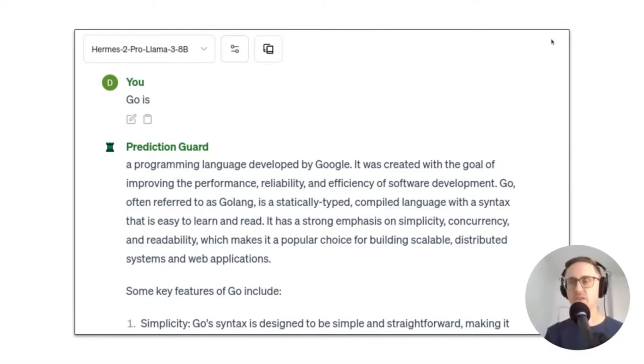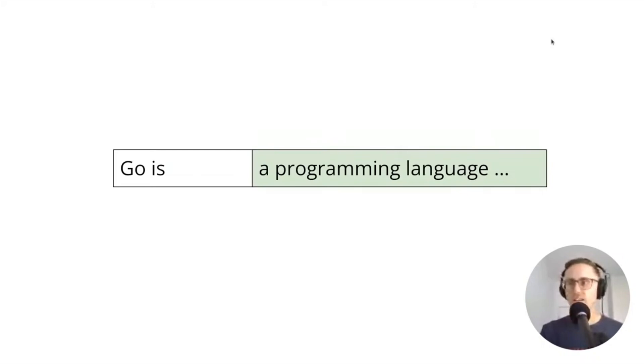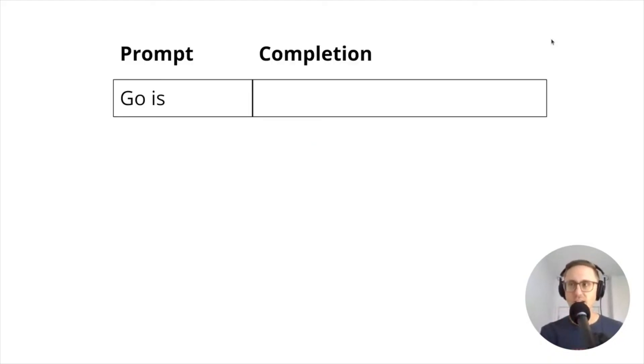When I use Llama 3 here, what's happening is I put in this input, 'Go is' something, and it came out with 'Go is a programming language,' it completed it, right? So just some jargon: this is generally called a prompt—what I put into the model. And then the completion is what the language model outputs out the other side.